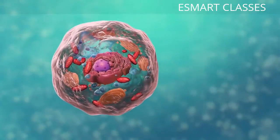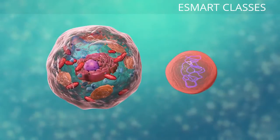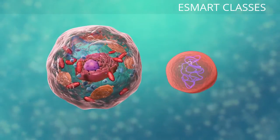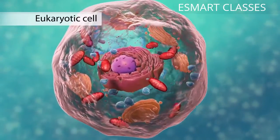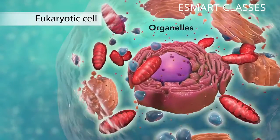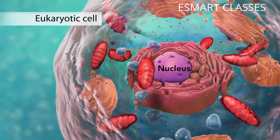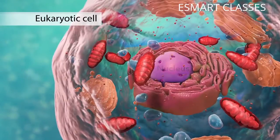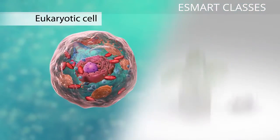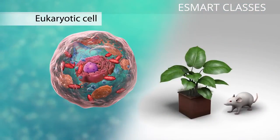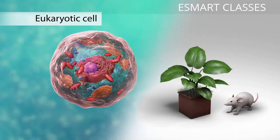There are two broad categories of cells. The first category is eukaryotic cells. They have organelles which include the nucleus and other special parts. Eukaryotic cells are more advanced complex cells such as those found in plants and animals.